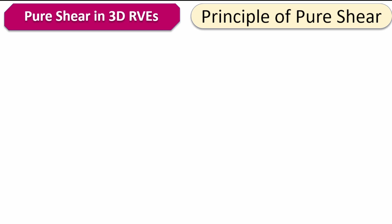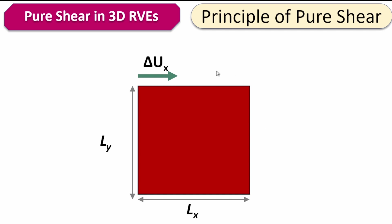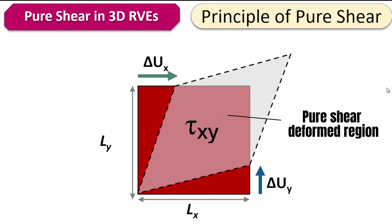Let's first think about the principle of pure shear in a 3D system. Assume a simple block with a length and width in 2D to start. When applying pure shear, you have to shear both sides of the domain — applying a deformation in the x direction at the top and a deformation in the y direction at the other end, so the resulting deformation becomes the pure shear distorted system.